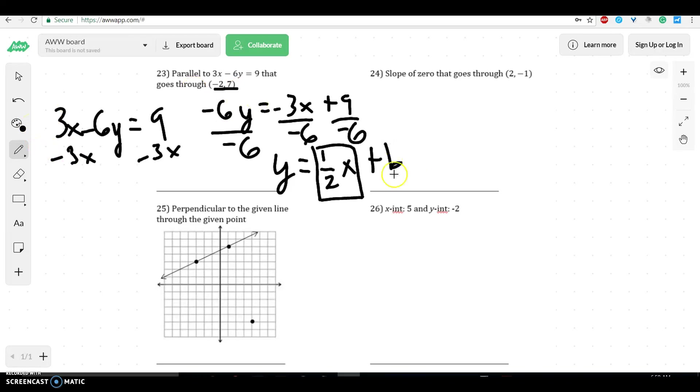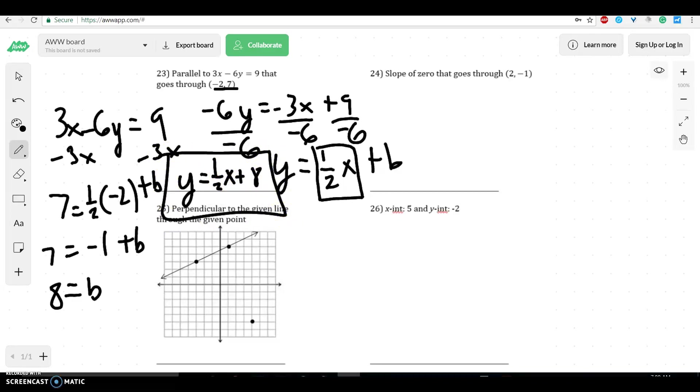And we're going to use this point to find the b value. So because we now know that this slope is 1/2, we can use that point to plug in 7 and plug in negative 2 and then find b, which means you have 7 equals negative 1 plus b, which means you have b equals 8. So for this one, we get our equation to be y equals 1/2x plus 8.